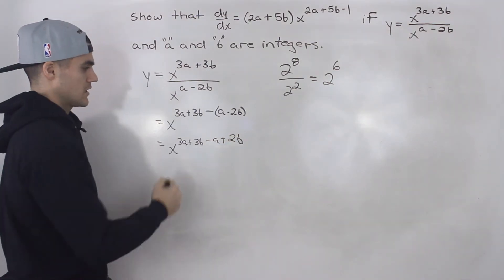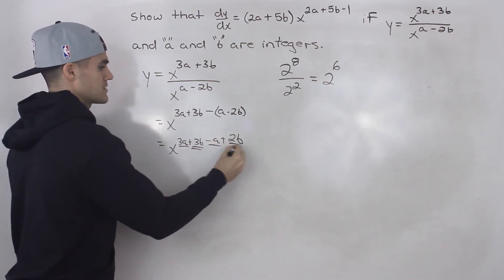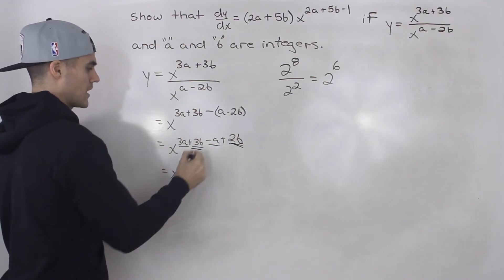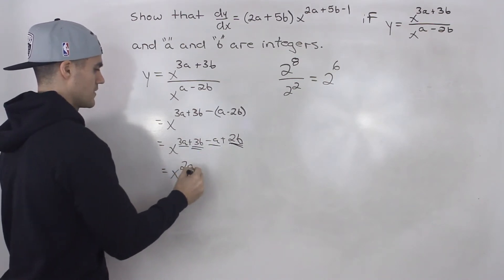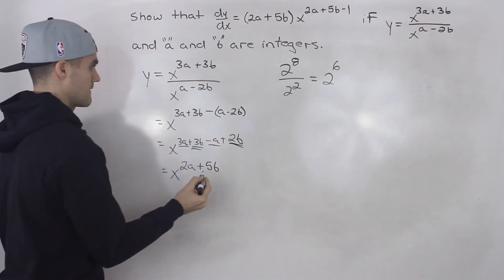Then we would have x^(3a + 3b - a + 2b). Notice we can simplify the like terms. 3a minus a gives us 2a. 3b plus 2b gives us 5b.